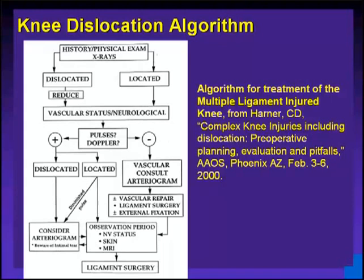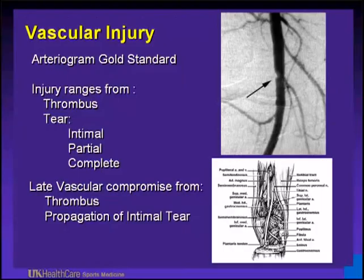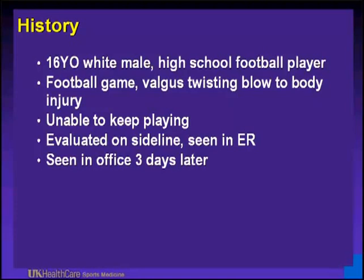This is the algorithm for planning complex knee injuries including dislocations. Vascular status arteriogram is the gold standard. The injury can be a thrombus, a tear of the intima — partial or complete — or late vascular compromise from a thrombus or propagation of an intimal tear.